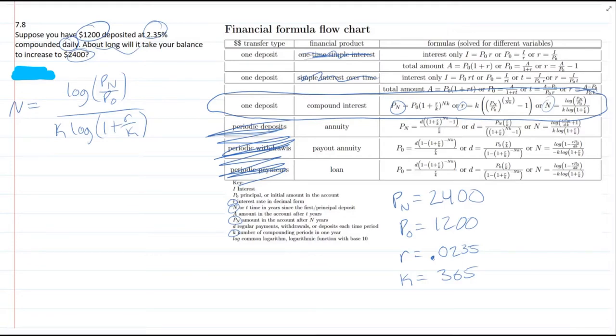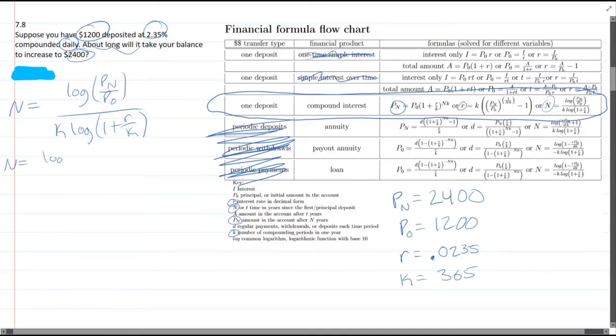We're ready to plug in all these values. So we have 2400 divided by 1200, divided by k is 365, times log of one plus the rate 0.0235 divided by 365.